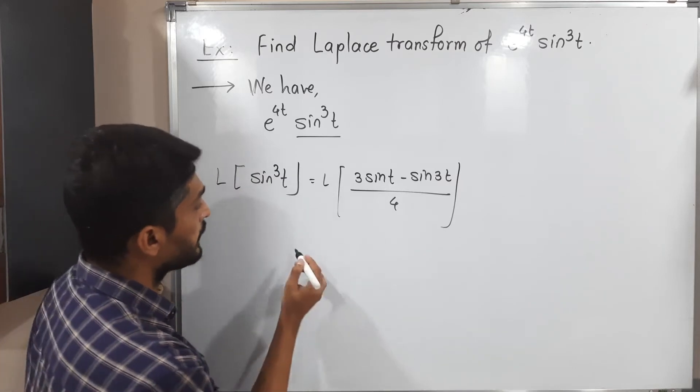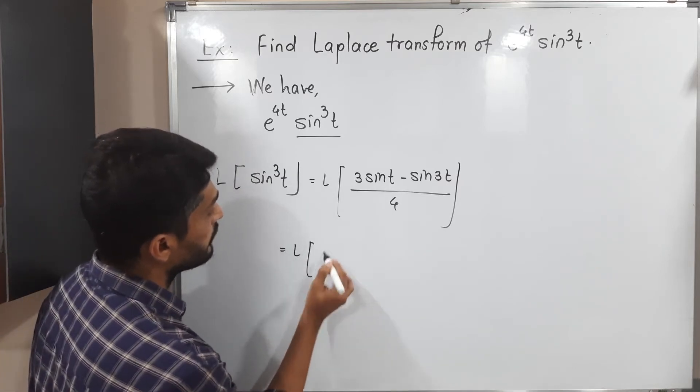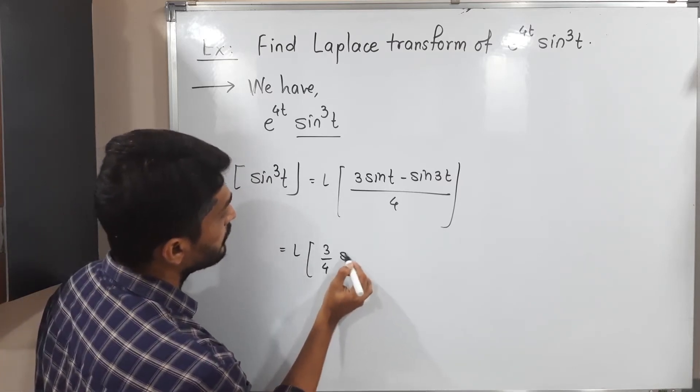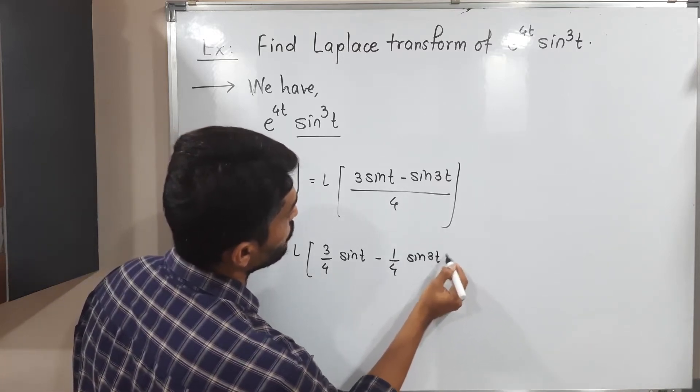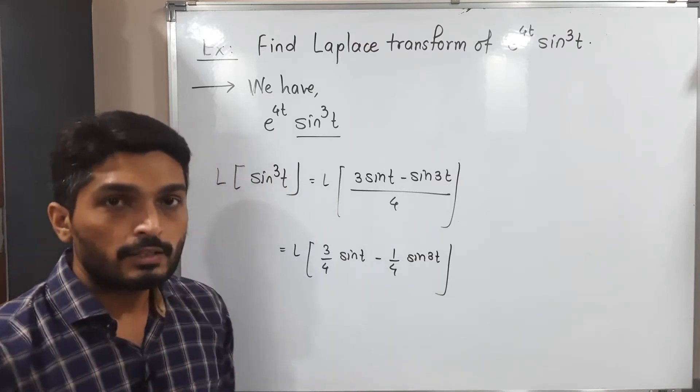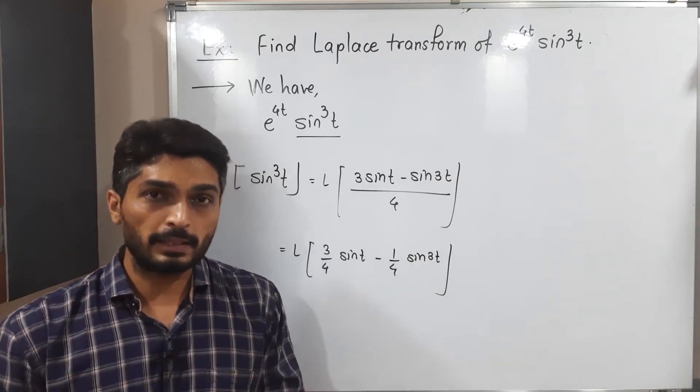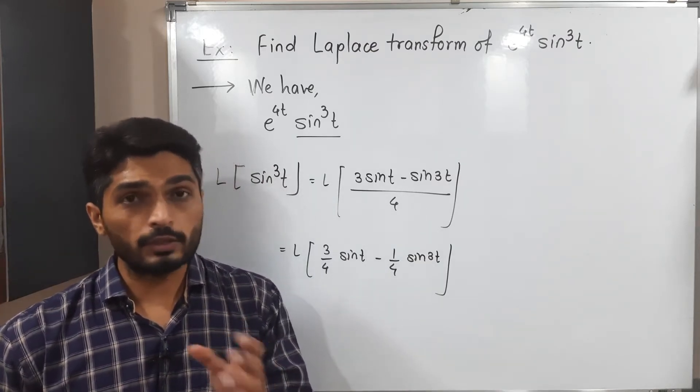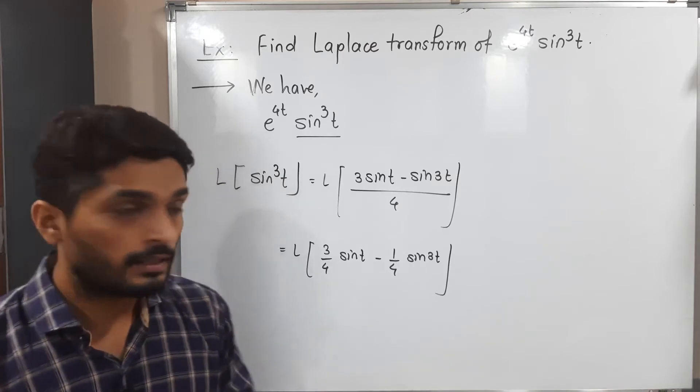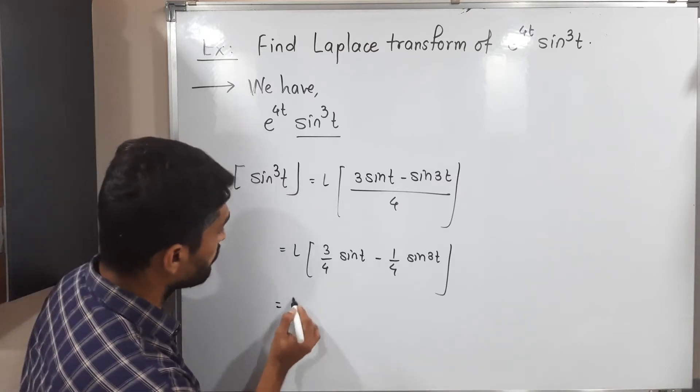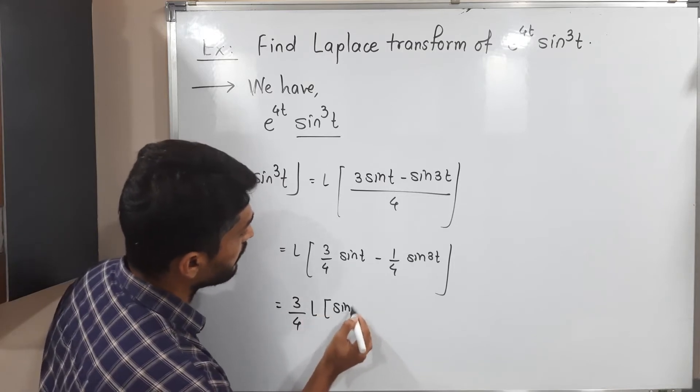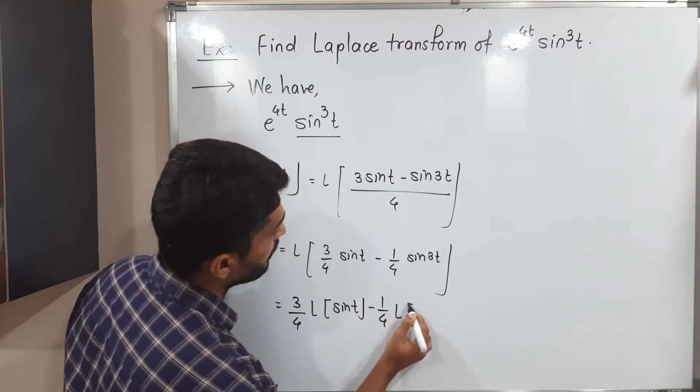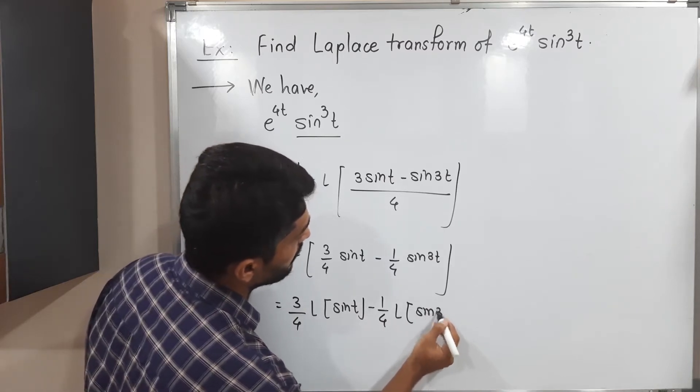We can divide separately by 4. So this is Laplace of 3/4 sin t minus 1/4 sin 3t. So we have to find its Laplace. So minus sign is there. So we can take separate Laplace as well as constants are there. We can take them outside. Let us do that. So this is equal to 3/4 Laplace of sin t minus 1/4 Laplace of sin 3t.